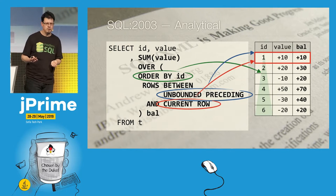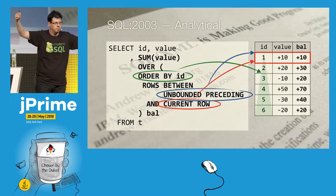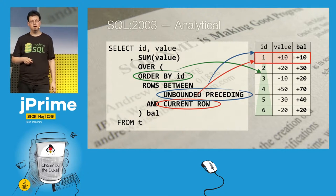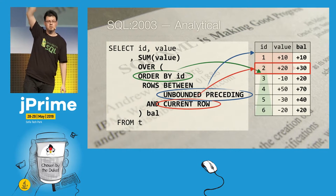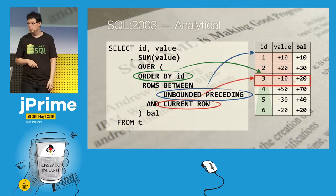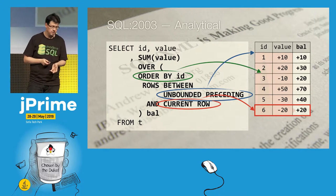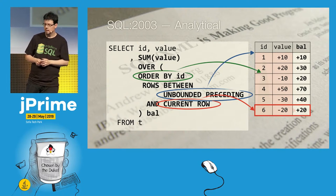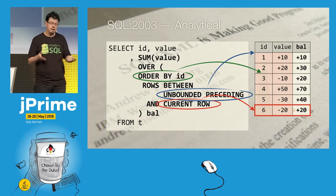When the database runs that query and is at the first row, the frame between UNBOUNDED PRECEDING and CURRENT ROW captures exactly one row — result is 10. At the second row, UNBOUNDED PRECEDING still means the very top, but CURRENT ROW is now the second, so it covers two rows and gives the total of both. And so on. You can do really fancy stuff — for example, ROWS BETWEEN 3 PRECEDING AND 3 FOLLOWING for a moving average. Window functions were introduced into the international standard in 2003.